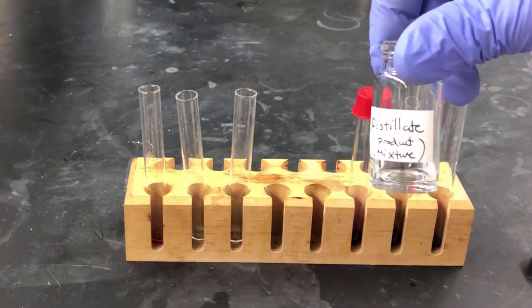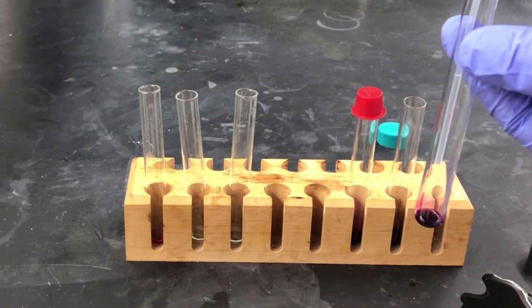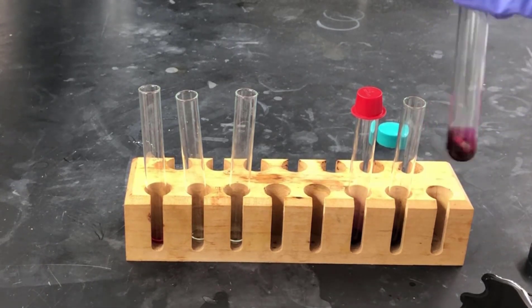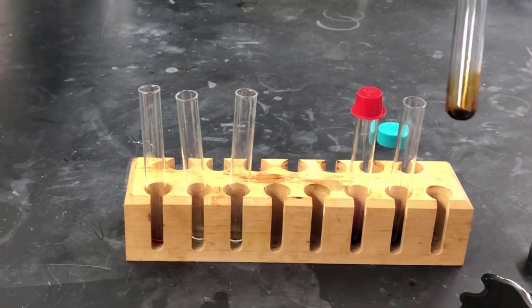Next, we'll do our product mixture, the distillate we collected from the previous step. We'll add a couple of drops of that material and note the result. After agitating for a while, we can see the color change from purple to chunky-red-brown. This is a positive result, and it means alkenes are present.